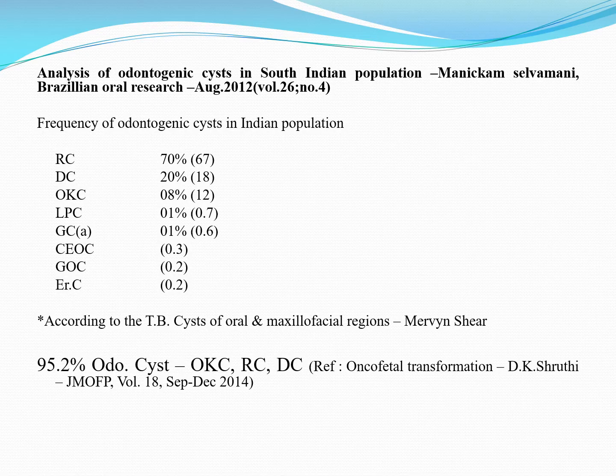Anterior teeth are more prone to trauma. Of course, dental caries left untreated can also lead to a radicular cyst, but the most common etiological factor is trauma. Trauma can lead to a non-vital tooth, which in turn may give rise to a radicular cyst. The radicular cyst is more common in the anterior jaw. Any gender can be affected, but it is more common in males.